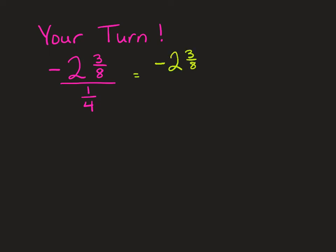2 and 3 eighths divided by 1 fourth. And so now we're just dividing fractions. I need to change my mixed number, negative 2 and 3 eighths, to a fraction. So it's negative 8 times 2 is 16 plus 3 is 19 over 8.